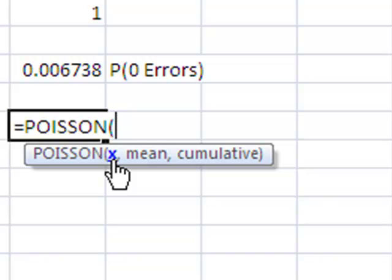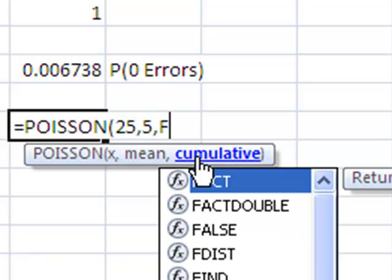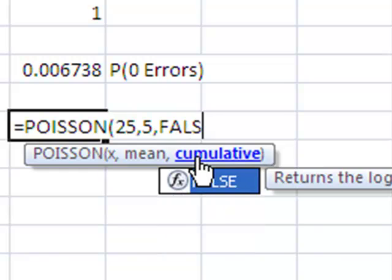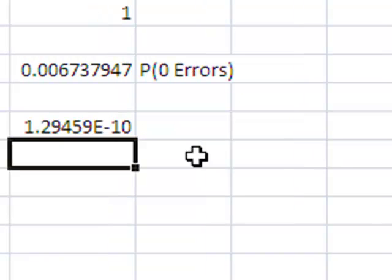First value it tells me is, see how I'm highlighting it here? X is 25. Next number it wants is the mean, which I know is 5. And now it wants to know cumulative. Well, I'm solving for what is the probability that exactly 25 billings contain an error. Remember, when I'm solving for an exact figure, I'm going to type false. And now I've got everything I need. I'm simply going to hit the Enter key. Now look at the number that I get.